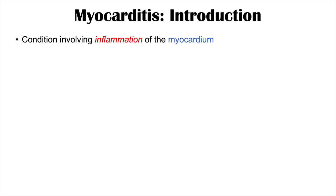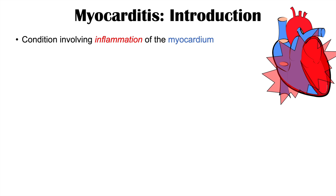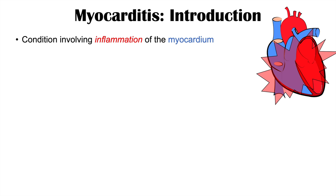Myocarditis is a condition involving inflammation of the myocardium. The myocardium is the main muscle of the heart — it allows the heart to pump blood. You can see it in the name: myocard refers to the myocardium, and -itis is the suffix referring to inflammation. So myocarditis is inflammation of the myocardium, which is the main heart muscle.